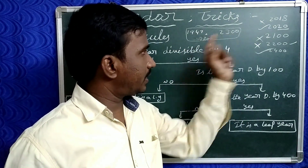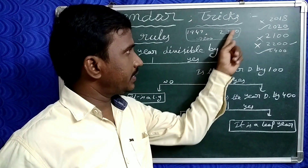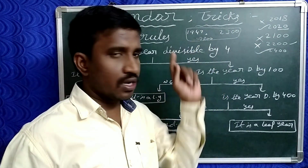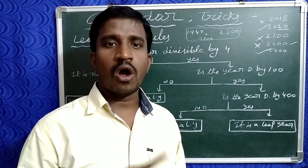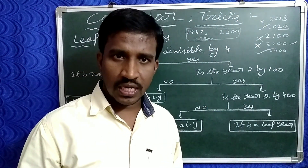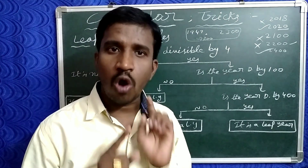Friends, practice problems: 1947, 2300, and 2800 — check whether each of these is a leap year or non-leap year and write your answers in the comment box.